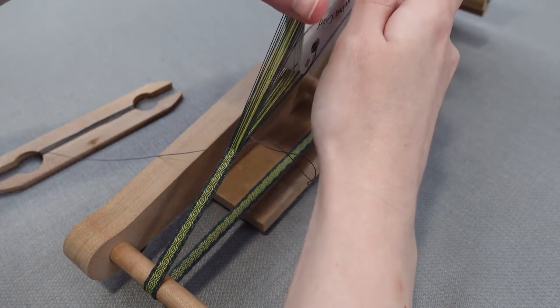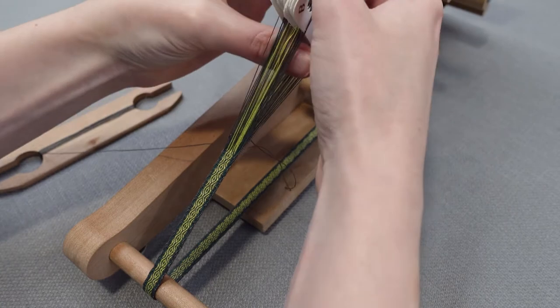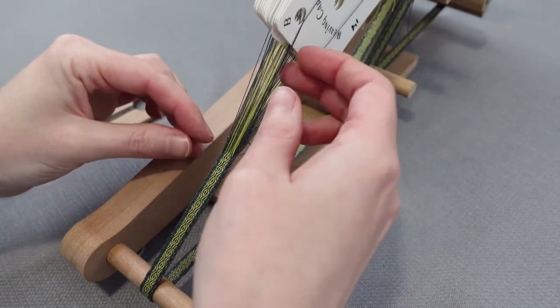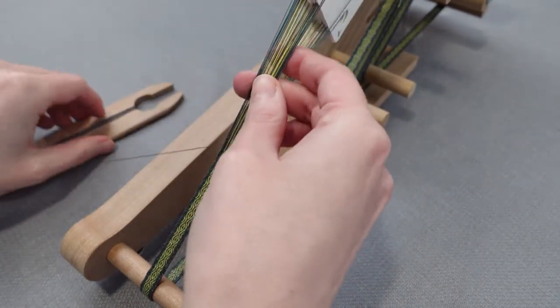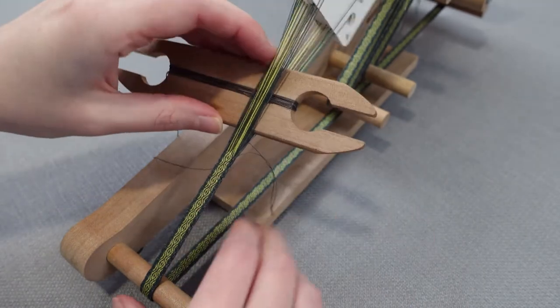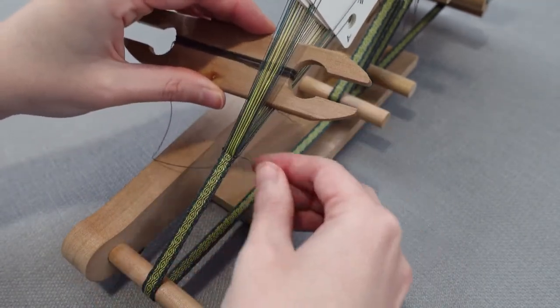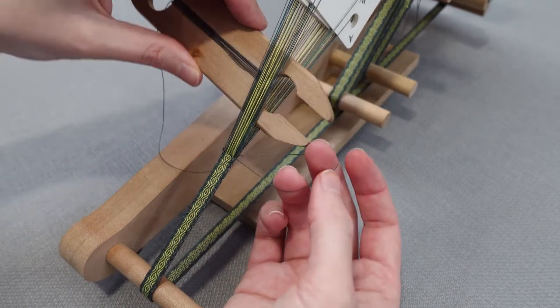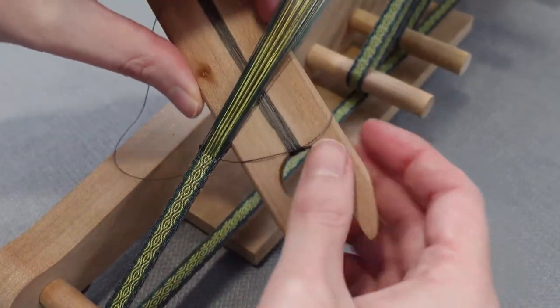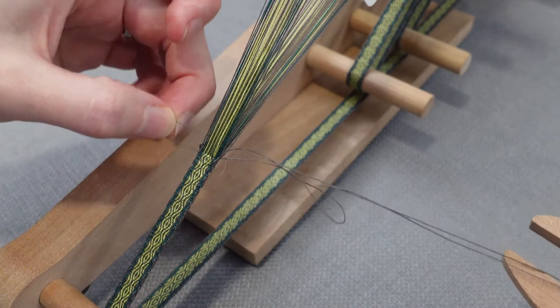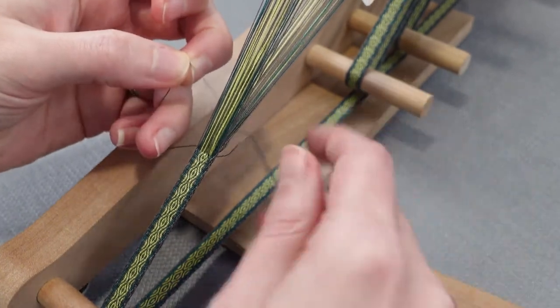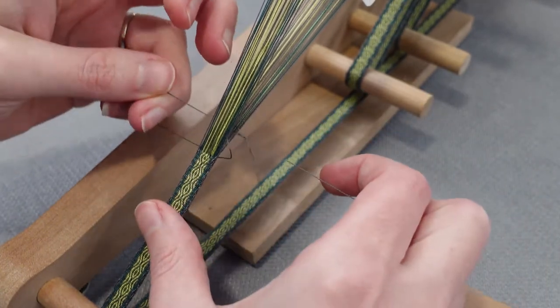Once you're done weaving, leave a larger loop than normal when passing the shuttle through the shed. Turn the cards and beat the warp, then pass the shuttle through the large loop. Pull the warp thread to secure and do one last turn of the cards.